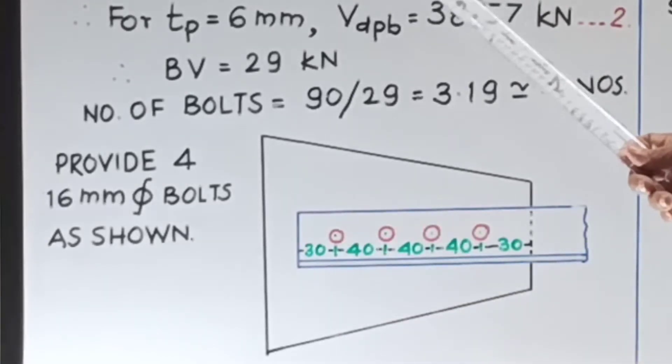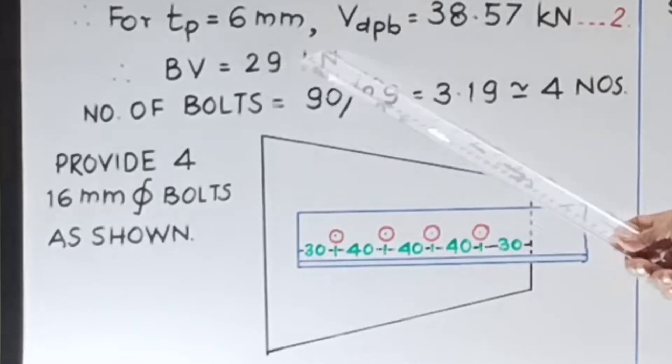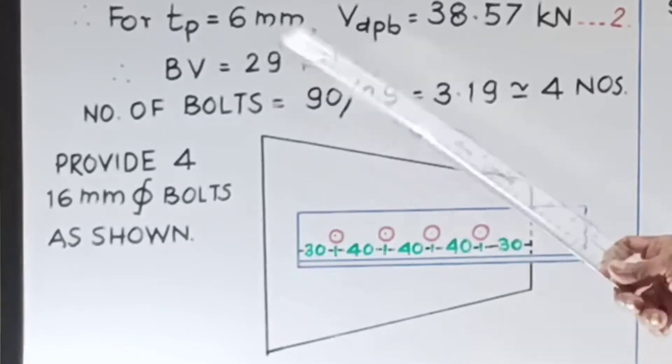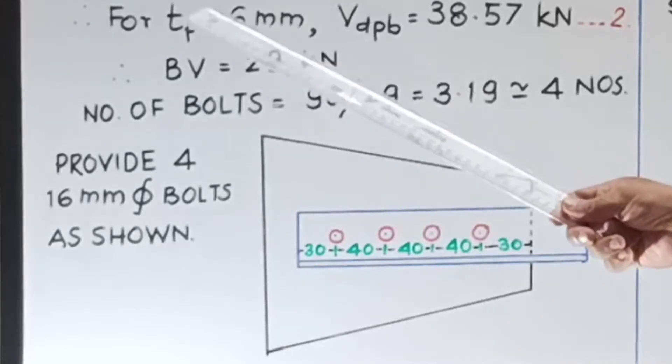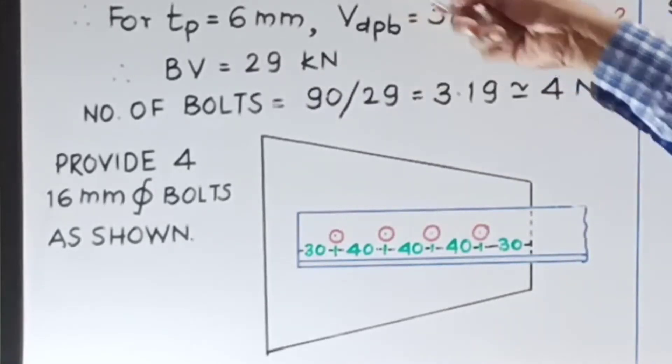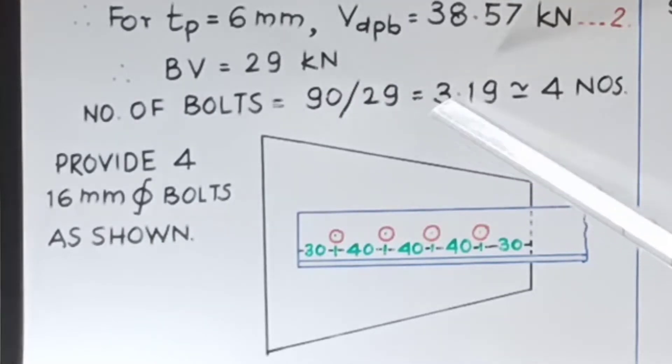So out of 1 and 2 which is minimum is this minimum, so bolt value is 29 kilonewton. What do we mean by bolt value? Bolt value means strength of 1 bolt is 29 kilonewton. So how many bolts are required? It is the ultimate load that is 90 kilonewton divided by 29. This comes out to be 3.19 that is 4 numbers.